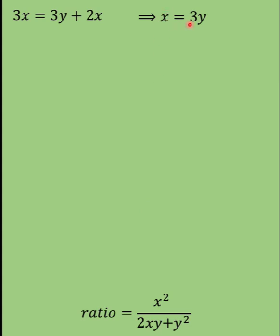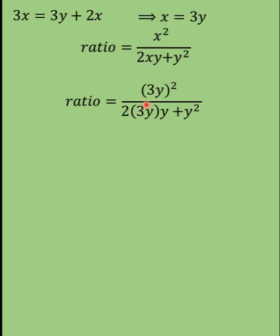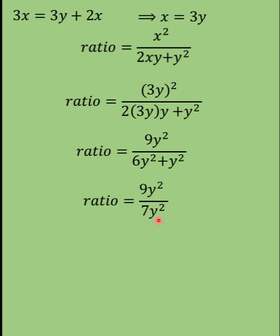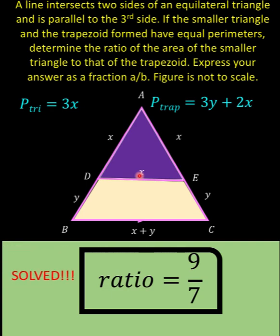Recalling that X equals 3Y, we replace X with 3Y. The numerator becomes (3Y)² = 9Y². The denominator becomes 2(3Y)(Y) + Y² = 6Y² + Y² = 7Y². So we arrive at 9Y² over 7Y², and canceling Y² gives a ratio of 9 over 7. The ratio of the area of the small equilateral triangle to the area of the trapezoid is 9/7.